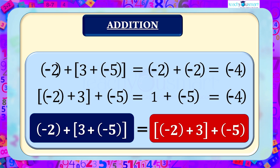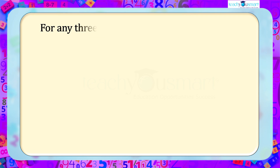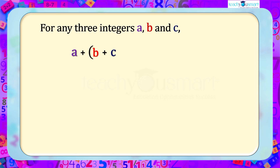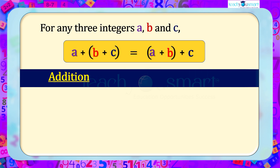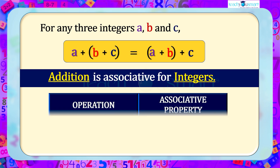We can see that grouping the numbers either way does not affect the result. In general, we can say that for any three integers a, b, and c: (a plus b) plus c equals a plus (b plus c). Therefore, addition is associative for integers.